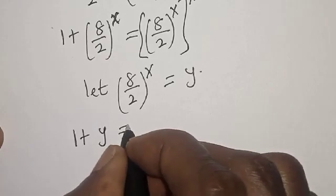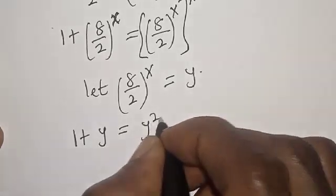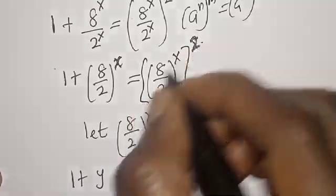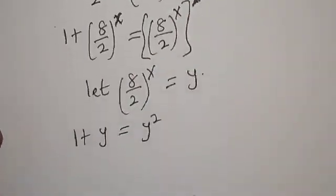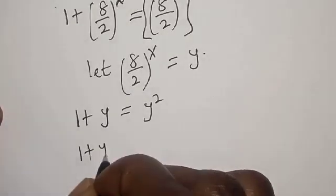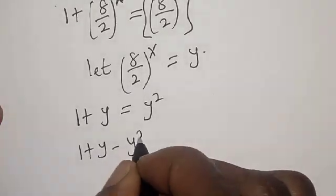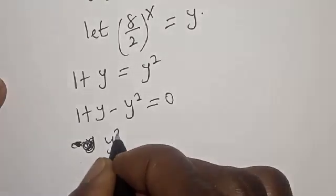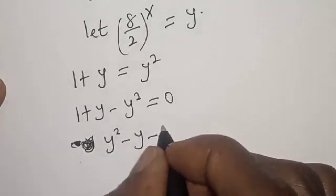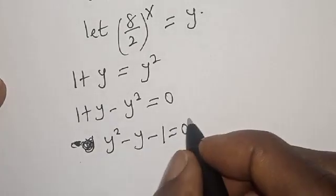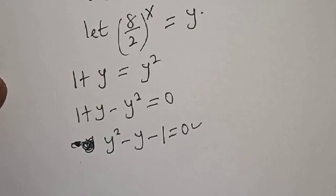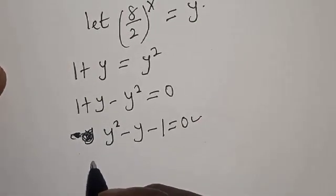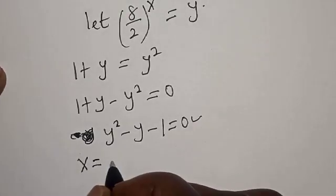Now we have 1 plus y is equal to y squared. Rearranging: y squared minus y minus 1 is equal to 0. This is a quadratic equation.